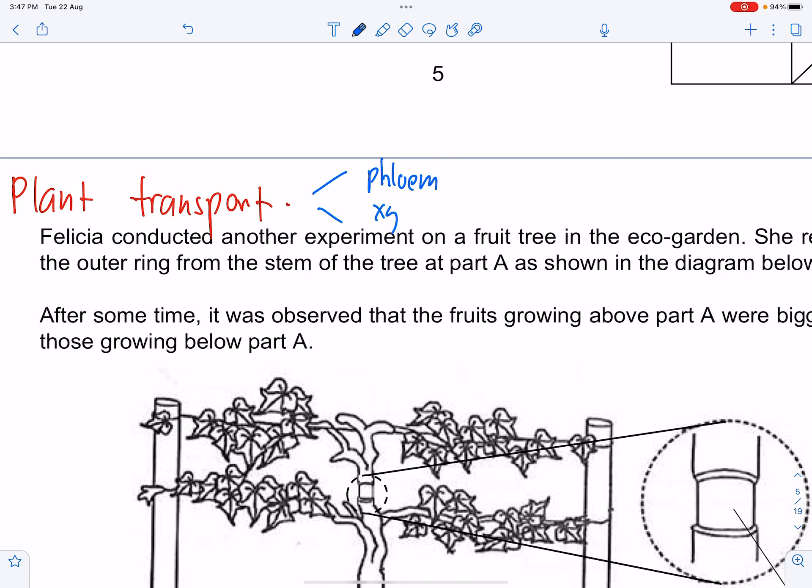That would be your phloem and your xylem, more commonly known as your food carrying and your water carrying tube.